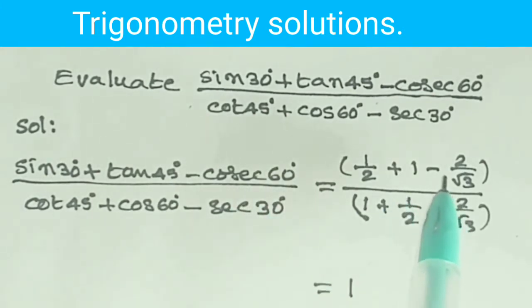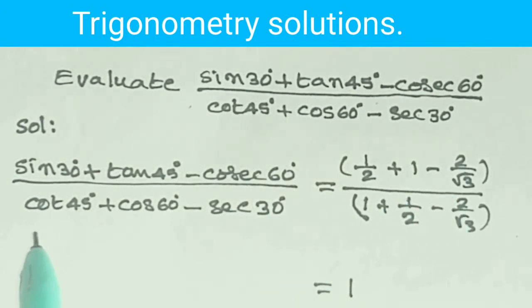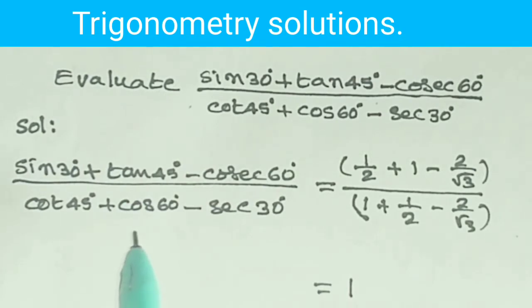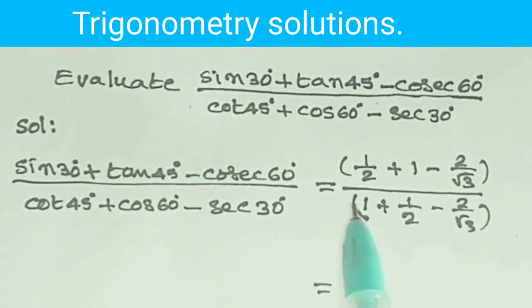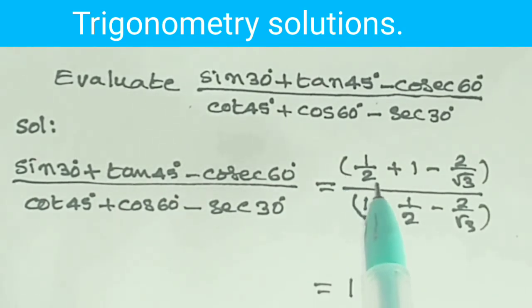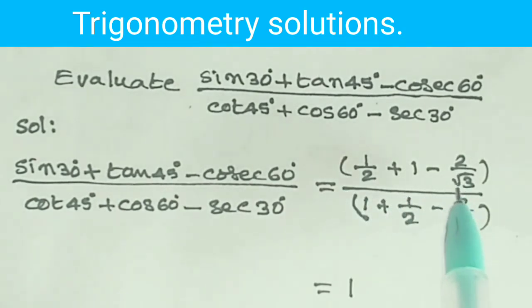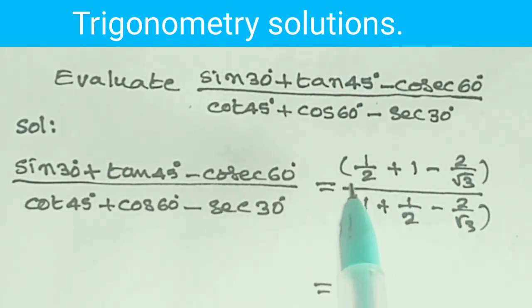sin 30 degrees is equal to 1 by 2, tan 45 is equal to 1, cosecant 60 degrees is equal to 2 by root 3. cot 45 is equal to 1, cos 60 degrees is equal to 1 by 2, secant 30 degrees is equal to 2 by root 3.